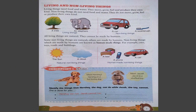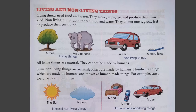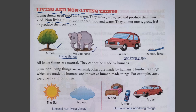On the second page we will see what are living and non-living things. Living things need food and water; they move, grow, feel, and produce their own kind. Non-living things do not need food and water; they do not move, grow, feel, or produce their own kind. Examples of living things: a tree, an elephant.